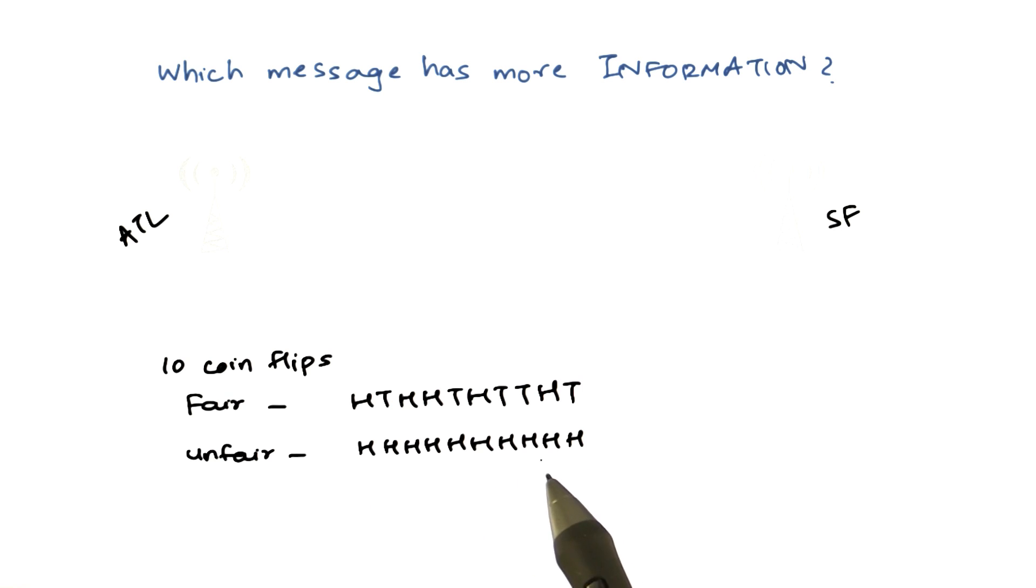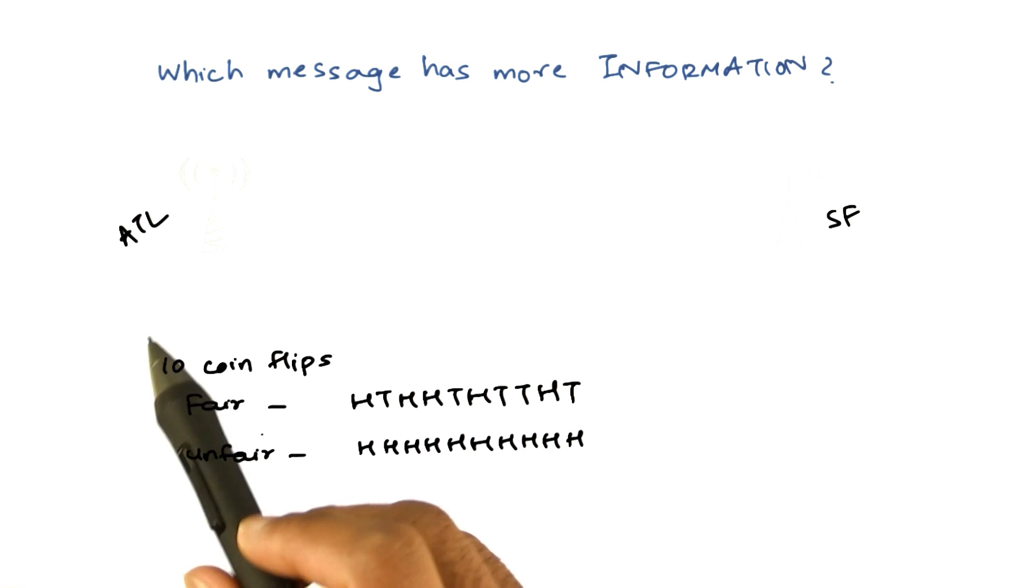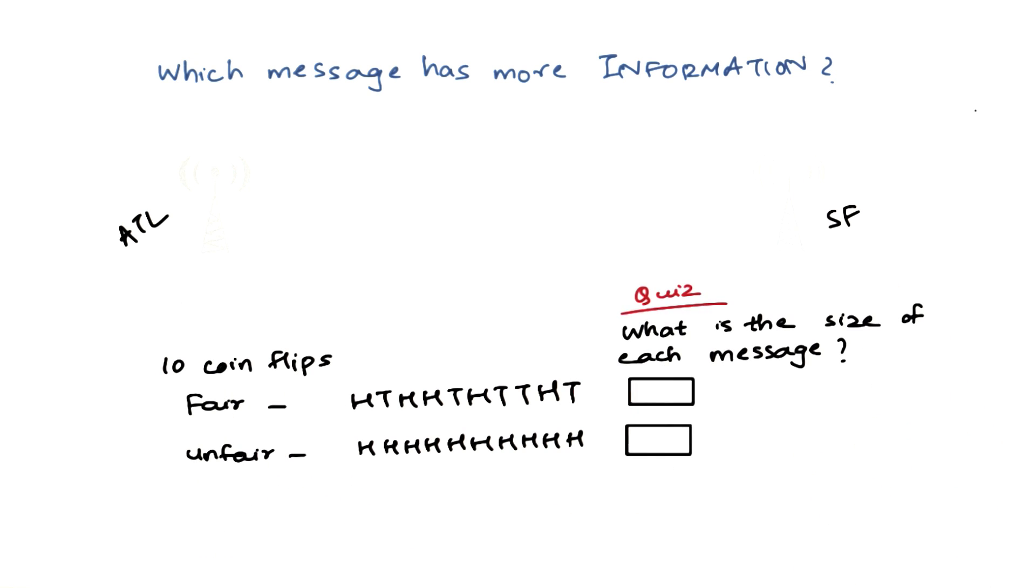Now, let's assume I have to transmit these two particular sequences from Atlanta to San Francisco. What will be the size of each message in case of the fair coin and the unfair coin? What do you think? Write down your answers here.